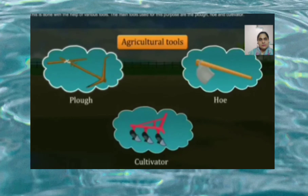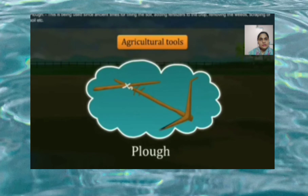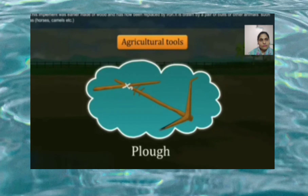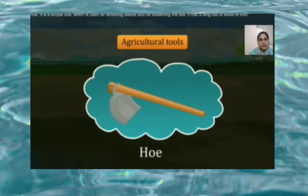This is done with the help of various tools. The main tools used for this purpose are the plow, hoe, and cultivator. The plow has been used since ancient times for tilling the soil, adding fertilizers to the crop, removing weeds, and scraping of soil. The implement was earlier made of wood and has now been replaced by iron. It is drawn by a pair of bulls or other animals such as horses and camels. The hoe is a simple tool used for removing weeds and for loosening the soil, and has a big rod of wood or iron.